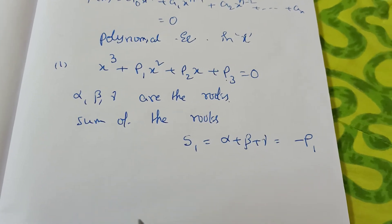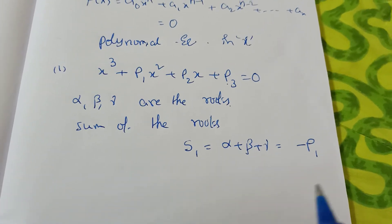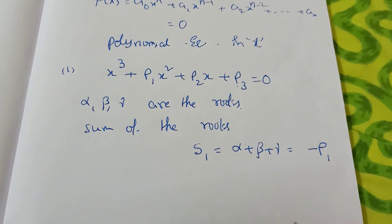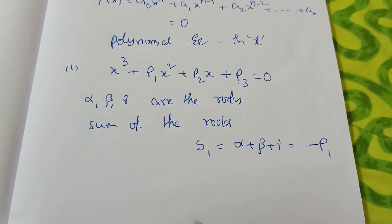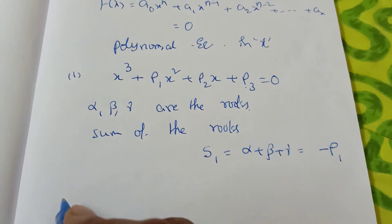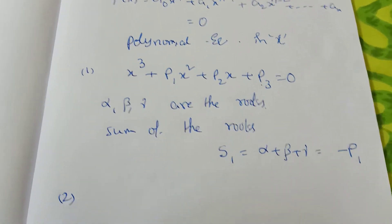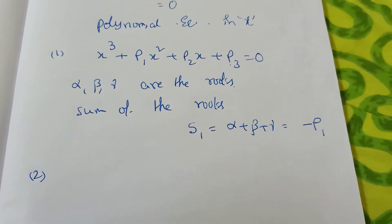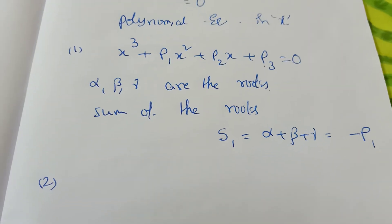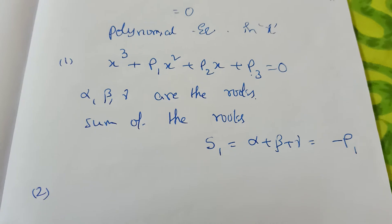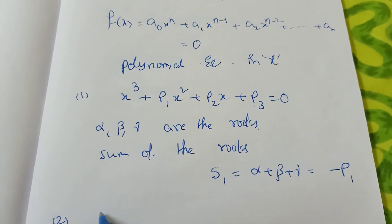Next, S2 is the sum of the product of the roots taken two at a time. See the second point here.